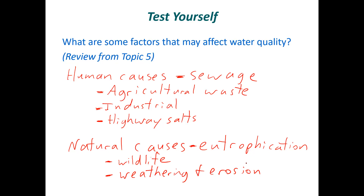Mining is sometimes worth including as a separate category from industrial. Due to all these different possible pollution sources, there are different types of things that can be in the water. If you think about sewage, we're concerned about fecal matter and diseases. Highway salts or weathering and erosion aren't necessarily going to kill us, but may affect the taste and turbidity. All of these things need to be removed or at least greatly reduced before we can put water in people's pipes.